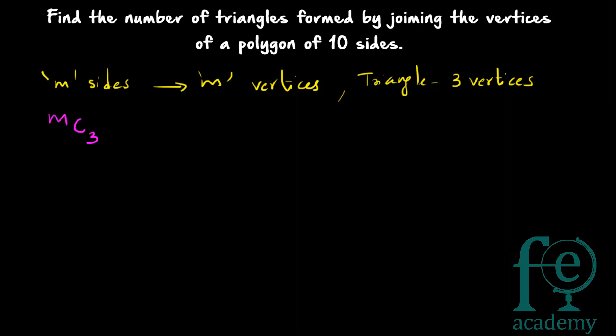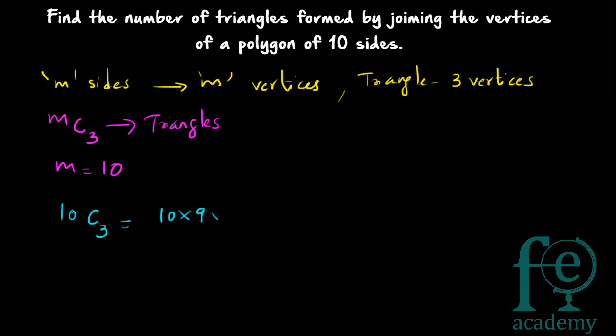When selection comes it is combination, so there are mC3 ways in which three vertices can be selected from the total of m vertices. You can say mC3 triangles can be formed from a polygon of m sides. Here m is equal to 10, so our answer will be 10C3.